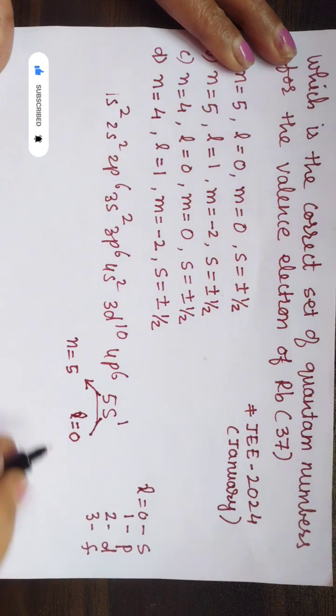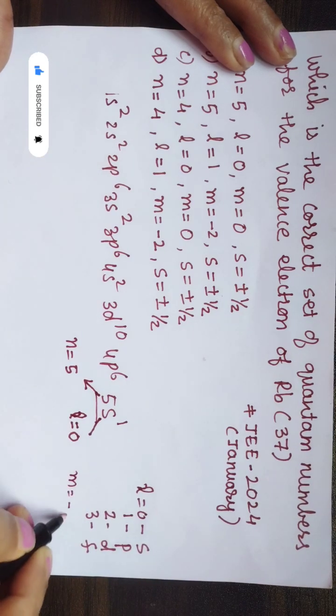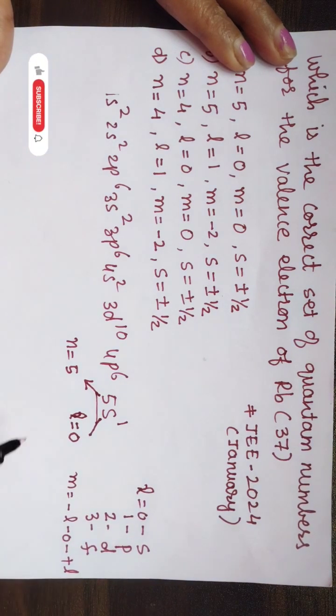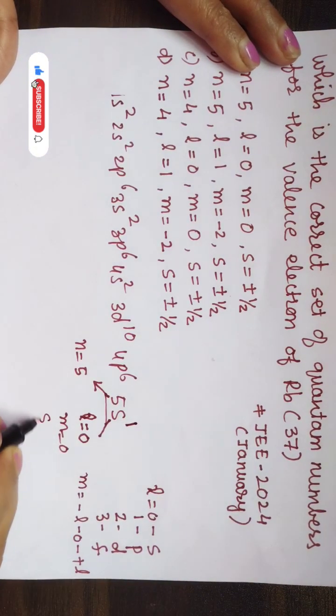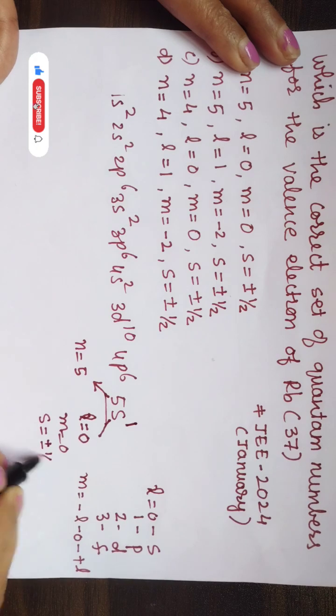Then for magnetic quantum number, the allowed values are from minus l through 0 to plus l. So here as l is 0, so m is also equal to 0. And s means one electron is there, so s is equal to either plus half or minus half according to your choice, as there is only one electron.